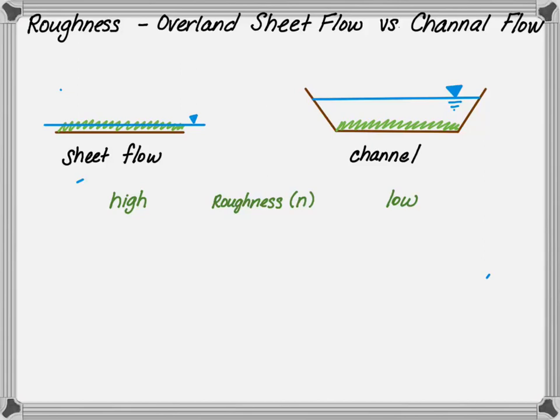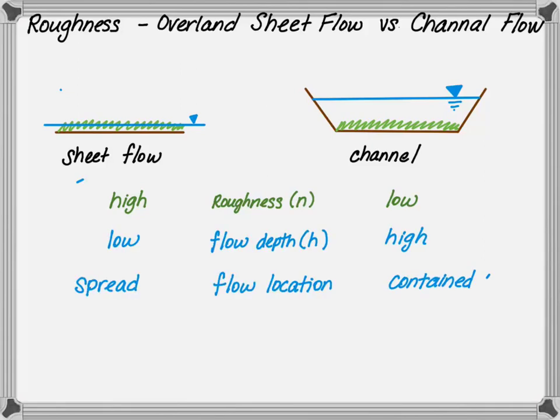While in the channel, the grass is not impacting the channel as much. When it comes to the flow, you can see the flow depth is very low in sheet flow compared to channelized flow. And finally, the velocity or flow potential is quite low in sheet flow, but it's much higher in channelized flow.